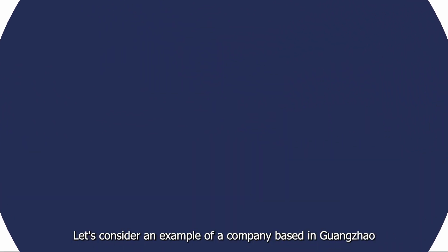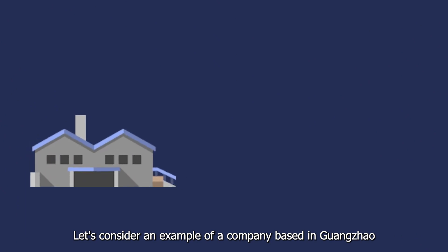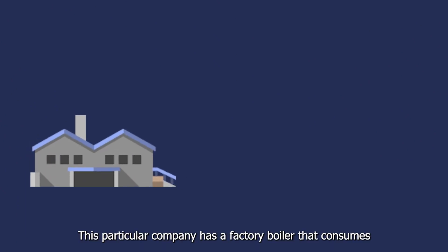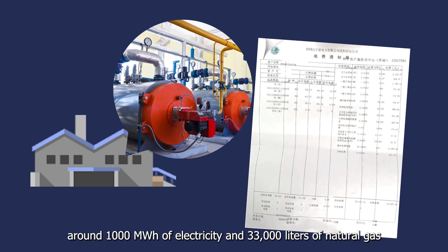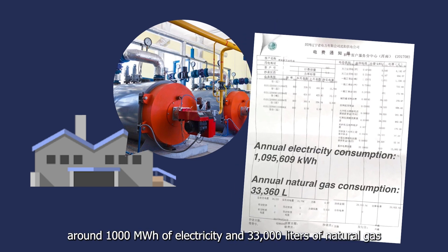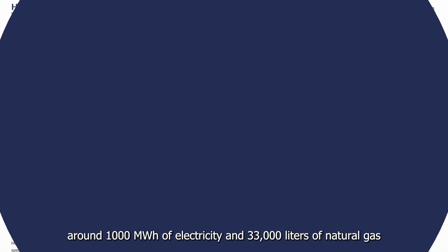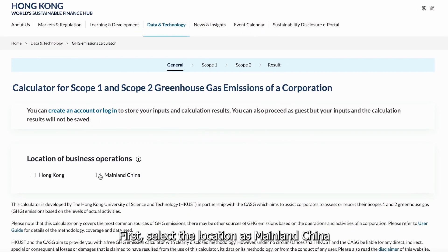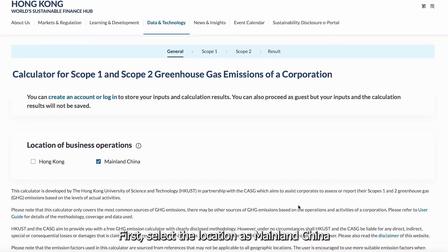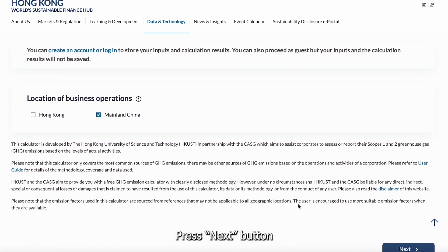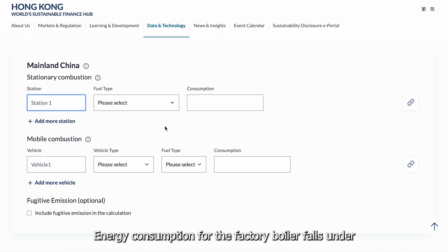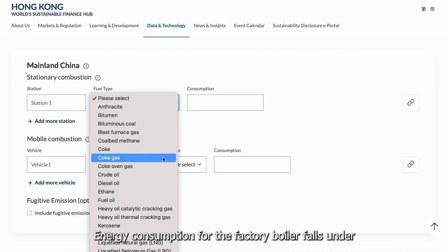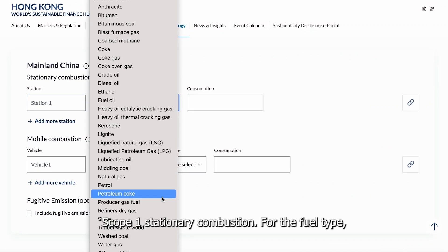Let's consider an example of a company based in Guangzhou. This particular company has a factory boiler that consumes around 1,000 MWh of electricity and 33,000 liters of natural gas. First, select the location as mainland China, then press the Next button.